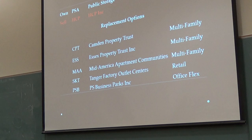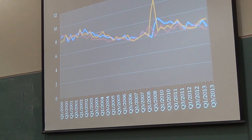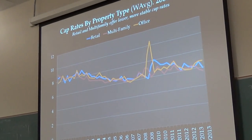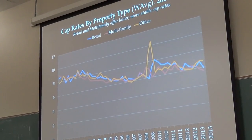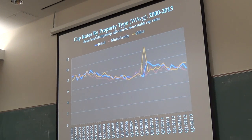We wanted to look at the industry level first to see which ones we'd delve into. Looking at the industry itself, a cap rate is an indication of property values — not the income from it, but the actual price of the buildings. The lower the cap rate, the higher the property value. Retail and multi-family offer the lowest cap rates, which is good, and they offer more stable cap rates. So office flex we might consider not pursuing.